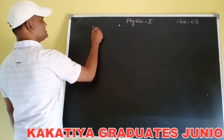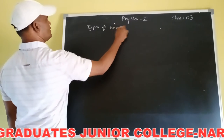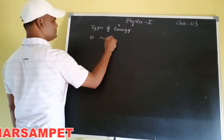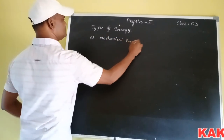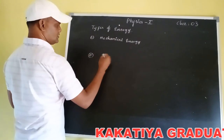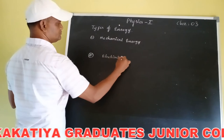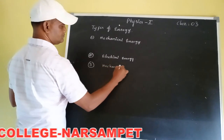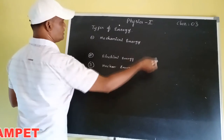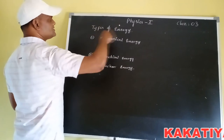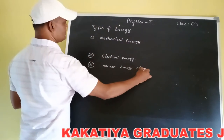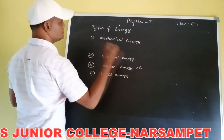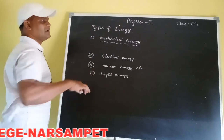The types of energy: energies are available in different forms like mechanical energy, electrical energy, nuclear energy, light energy, etc. The mechanical energies are again classified into two types.